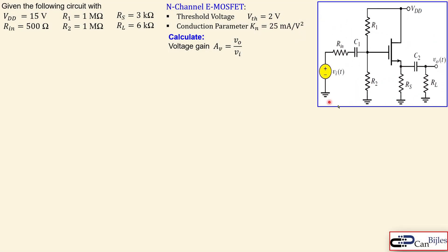This is the source follower circuit we will discuss. We have the N-channel enhancement type MOSFET with a threshold voltage of 2 volts and conduction parameter KN of 25 milliamps per square volt. We have resistors R1 and R2, both 1 megaohm, and also RS which is the source resistor, a load resistor, and the input resistor RIN. VDD is 15 volts for our DC supply.